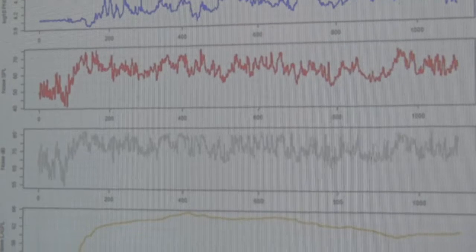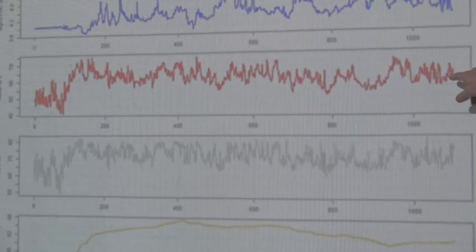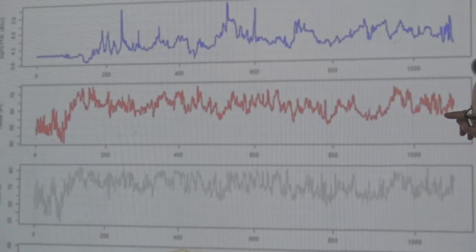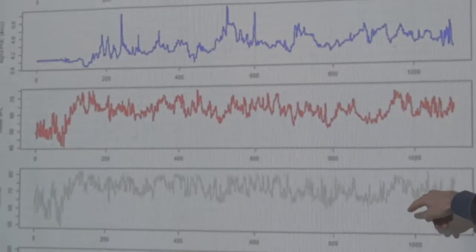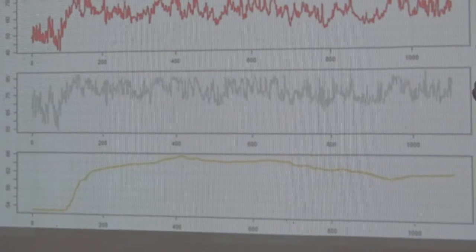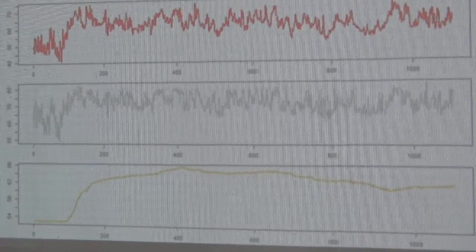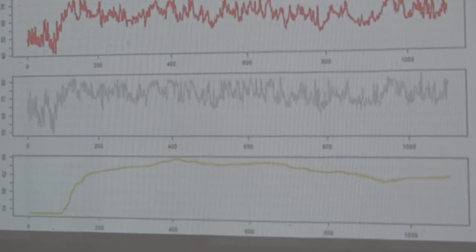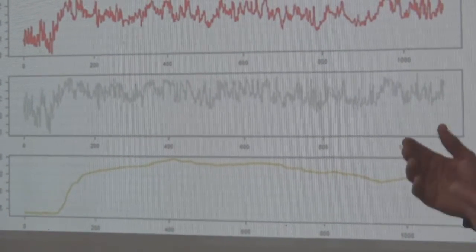And then we can try and align those. And these are the raw sound pressure level and the DBA, so it's weighted for human ear's response to sound pressure levels. And then LA equivalent, it's a kind of average measure.